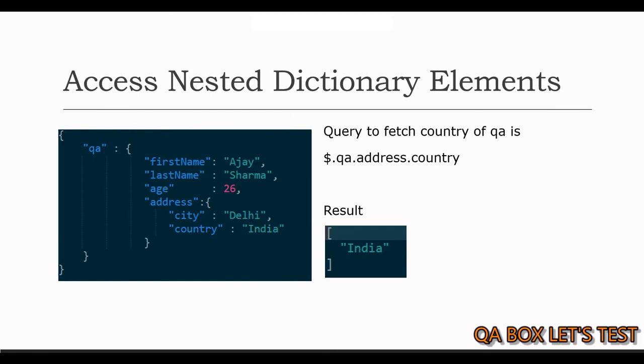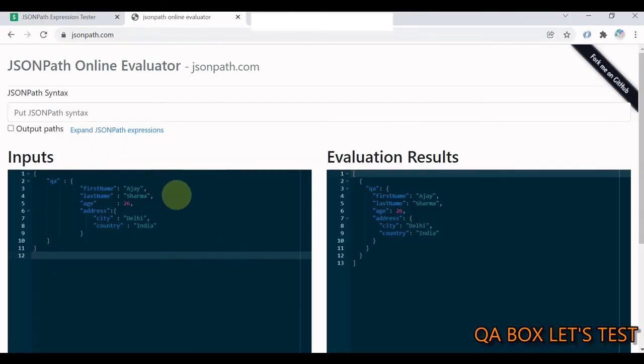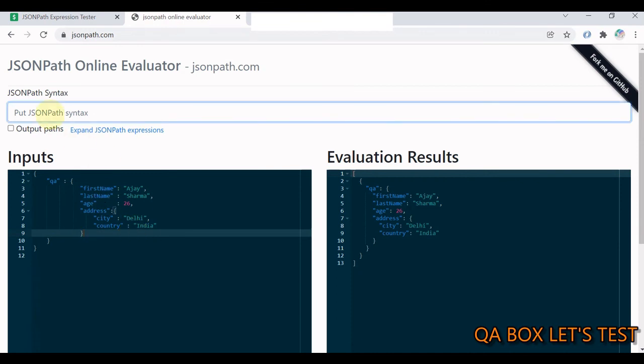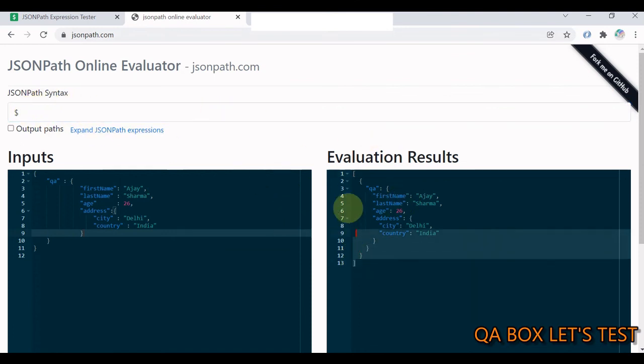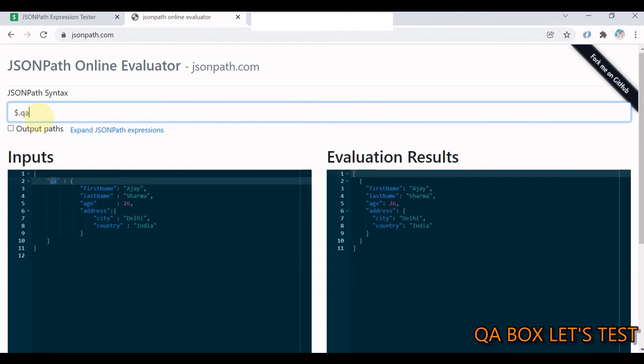Let's move on to our JSON path evaluator and this time there is one more that we can use jsonpath.com and here is the nested dictionary. We always start with the root element which is denoted by the dollar symbol. When you say dollar, immediately you see the outcome of it. You have to access this property so you say dot qa and now you see it is filtered down.